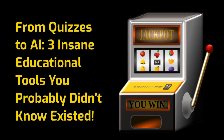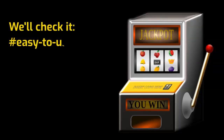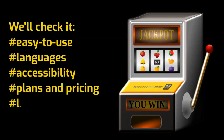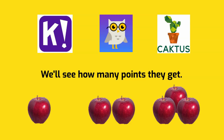From quizzes to AI, our slot machine: Kahoot, Socratic, and Cactus. We'll check easy to use, languages, accessibility, plans and pricing, and level of trust. We'll see how many points they get from 1 to 3.